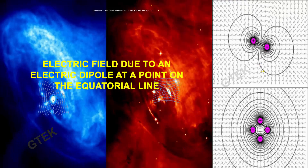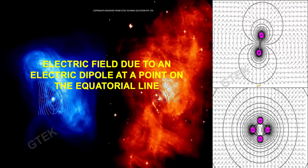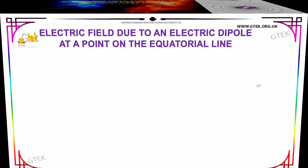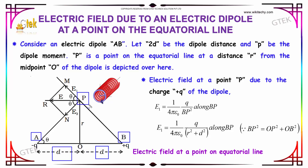Let's discuss the electric field due to an electric dipole at a point on the equatorial line. Considering an electric dipole AB, where 2D is the dipole distance. P is a point on the equatorial line at a distance R from the midpoint O of the dipole.